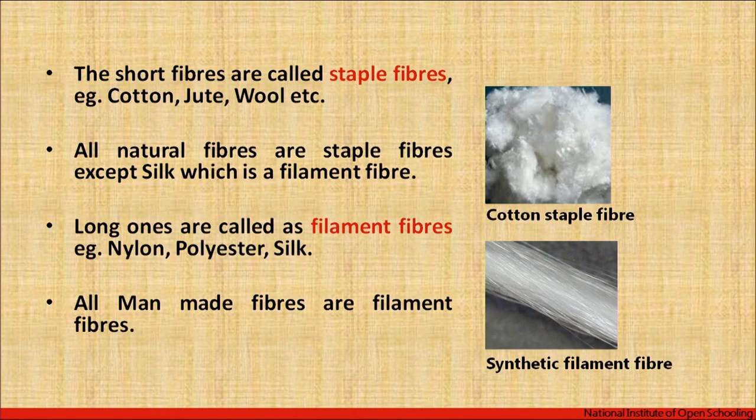All natural fibers come under the category of staple fibers. Staple fibers are short fibers, and all man-made fibers — in which we have synthetic and regenerated fibers — come under the category of filament fibers. Filament fibers are usually long fibers. Examples of natural fibers are vegetable fibers like cotton, flax, and jute, while man-made fibers include polyester, nylon, and acrylic. You can cut filament fibers into small chunks to make staple fibers. Silk, obtained from the cocoon of the silkworm, is the only natural filament fiber.